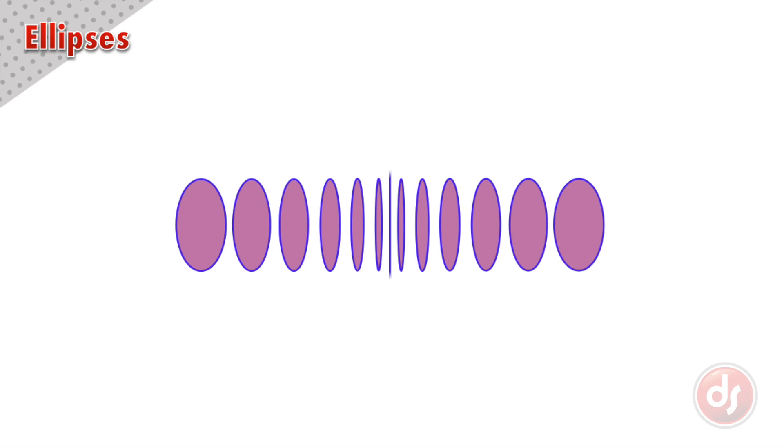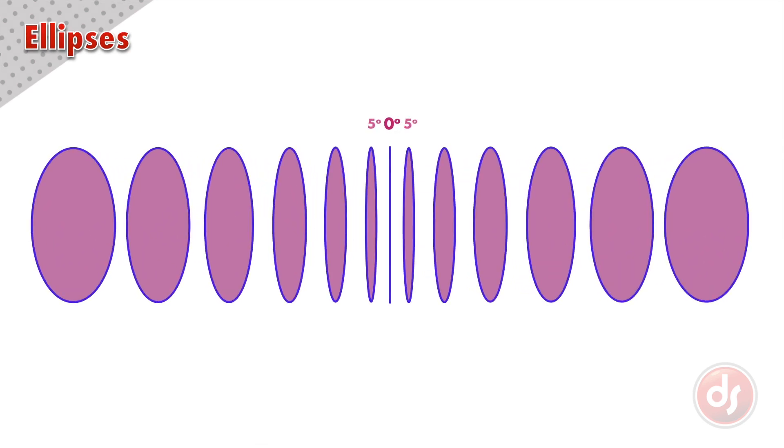We name ellipses by their degree. The more open an ellipse is, the larger the degree is. A 5 degree ellipse is very narrow. A 95 degree ellipse would be almost circular.